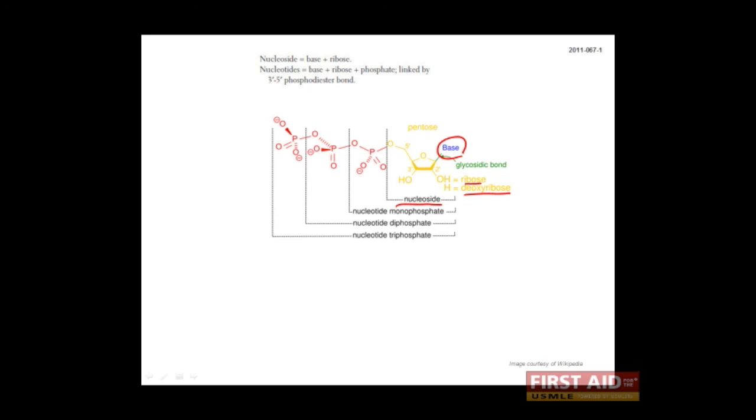Any addition of phosphate groups turns the nucleoside into a nucleotide. So with the addition of one phosphate group, we call it a nucleotide monophosphate, with two a nucleotide diphosphate, and with three a nucleotide triphosphate.